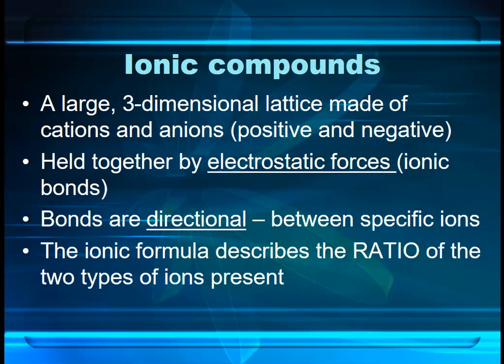Ionic compounds form large three-dimensional networks or lattices of anions and cations. They're held together by what we call electrostatic forces, or ionic bonds. These electrostatic forces are the attraction between the positive cation and the negative anion, and the bonds are directional — they are between specific ions. That becomes quite important when we start explaining the properties.